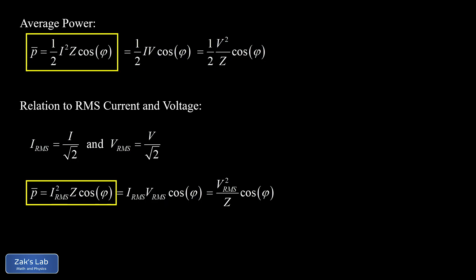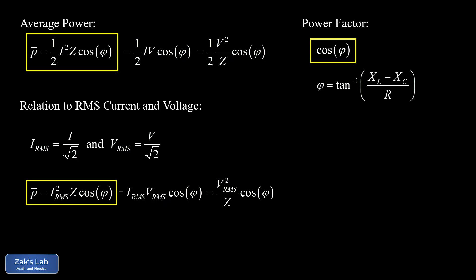The average power has a simple dependency on the phase angle φ — the angle between the net voltage phasor and the current phasor. The factor cos φ in the average power formula is given the special name power factor. This quantity is frequency dependent because φ = arctan((X_L − X_C)/R), and both X_L = ωL and X_C = 1/(ωC) depend on frequency.